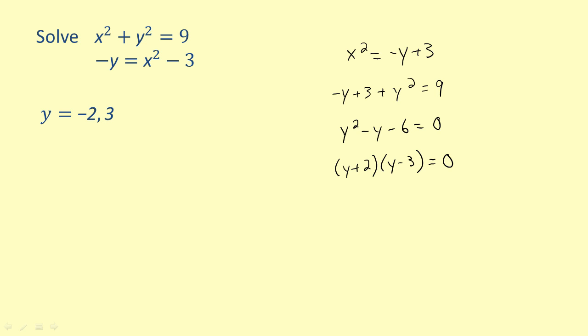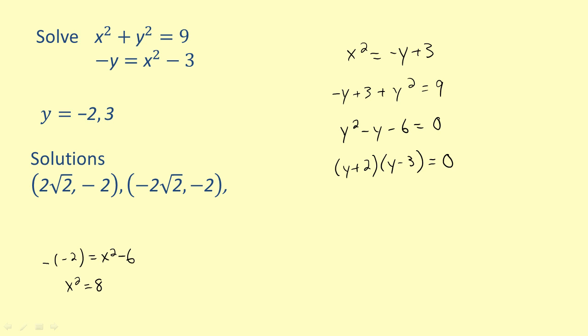We need to substitute these back into either equation to find their corresponding x values. When we substitute negative two for y in the second equation, we get x squared equals eight. Solving for x, we get two times the square root of two and negative two times the square root of two. When we substitute three for y into the second equation, we get x squared equals three. Solving for x, we get the square root of three and negative square root of three.